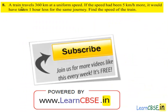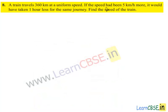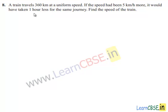Moving on to the eighth problem. A train travels 360 km at a uniform speed. If the speed had been 5 km per hour more, it would have taken 1 hour less for the same journey. Find the speed of the train.